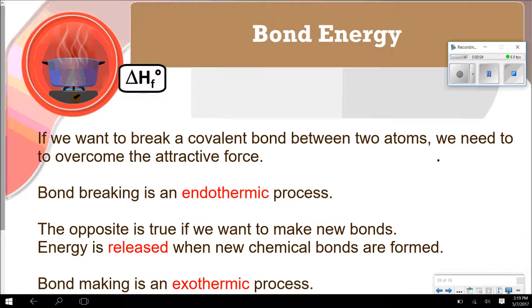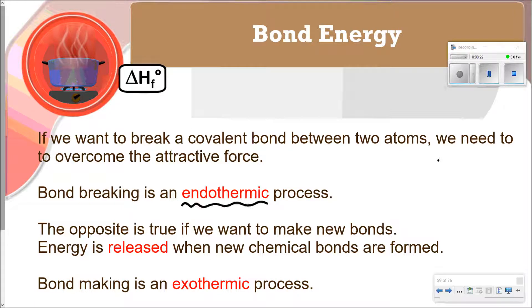Okay. So there's one other way that we can look at the overall enthalpy of a reaction. And that's by looking at the bond energies in our products and our reactants. So if, for example, we want to break a covalent bond between two atoms, we're going to need to overcome the attractive force that's in that bond. And so bond breaking is going to be an endothermic process. The opposite is going to be true if you want to make a new bond. So if you're building new bonds and making them, energy is going to be released. And therefore, bond making is going to be exothermic. And it's imperative that you know these two concepts and understand the difference between them in order to solve these problems. So bond breaking is endothermic. You are taking in energy to break a bond. But when you make a bond, you are releasing energy.